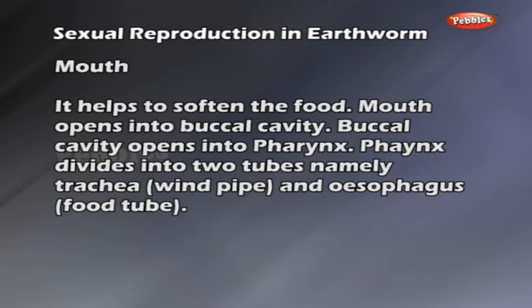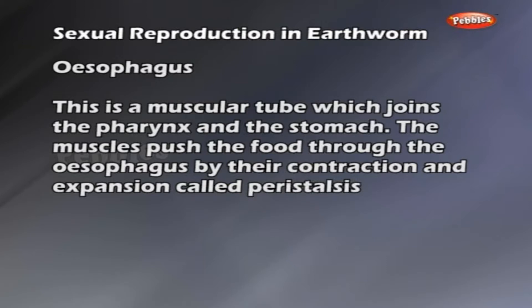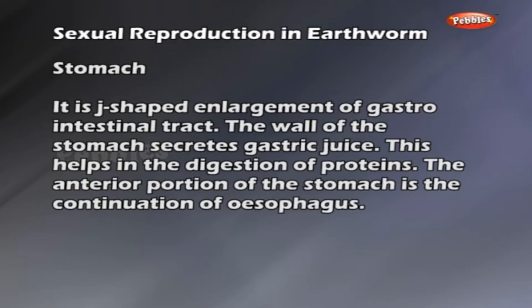The esophagus is a muscular tube which joins the pharynx and the stomach. The muscles push food through the esophagus by contraction and expansion, called peristalsis. The stomach is a J-shaped enlargement of the gastrointestinal tract. The wall of the stomach secretes gastric juice, which helps in the digestion of proteins.